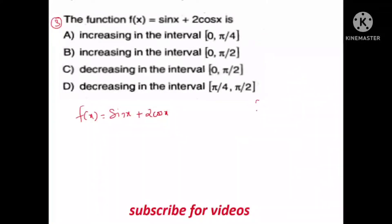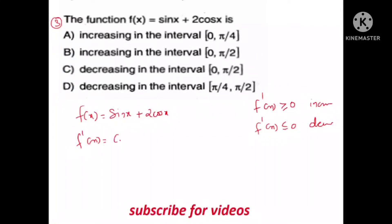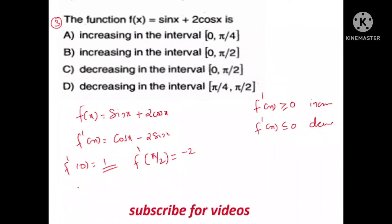F(x) is connected. Now, let's compute: F'(x) equals cos x minus 2 sin x. Now, in this case, what is f'(0)? f'(0) is 1. And f' of π/2 — let's compute f'(π/4).